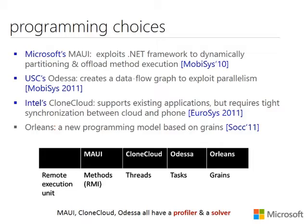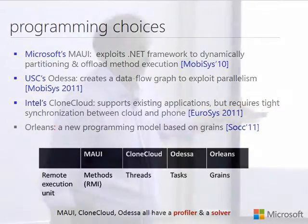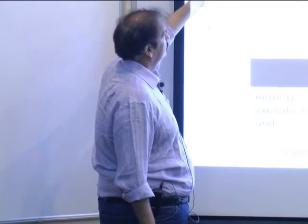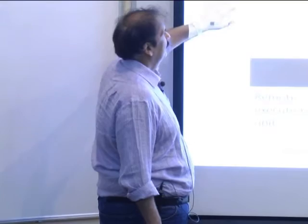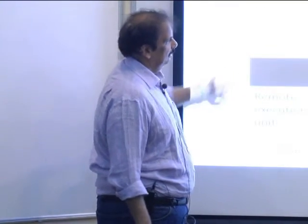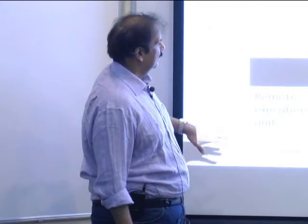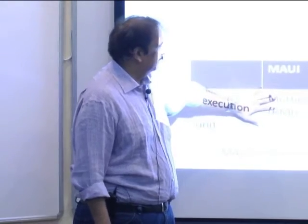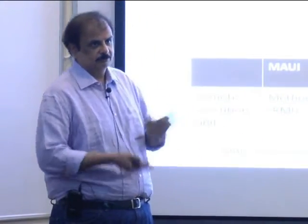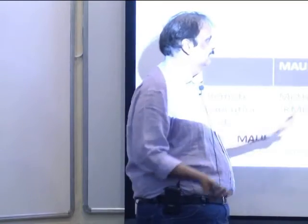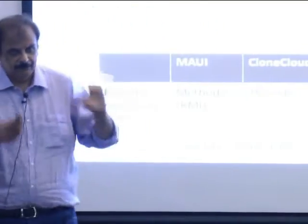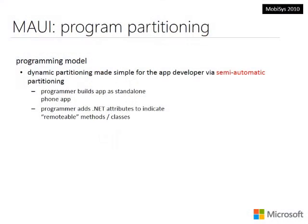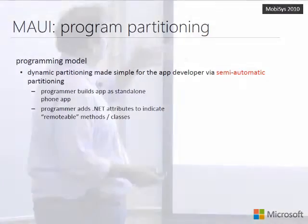There are several ways to do cloud offloading. We had a system called MAUI. UC San Diego had a system called ADESA. Intel had a system called Clone Cloud. There was another called Orleans. Each one works differently: the Microsoft MAUI system offloads methods, another does threads, another does task grains. There are different ways of looking at this problem, and you can decide which you like best.